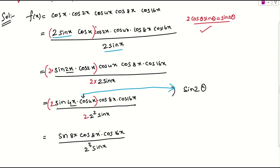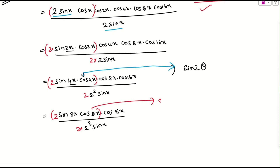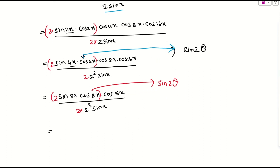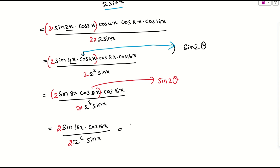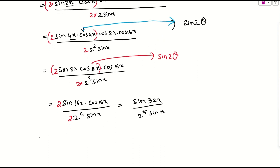Again, 2 is missing in the numerator. Multiply by 2 and divide by 2. Taking those three terms and applying the same formula — sin 2 theta where 2 times 8 is 16, so sin 16x — continuing: sin 2 theta with theta equal to 16x gives sin 32x. So finally, f of x equals sin 32x divided by 2 to the power 5 times sin x, and since 2 to the power 5 is 32, this is sin 32x divided by 32 sin x.